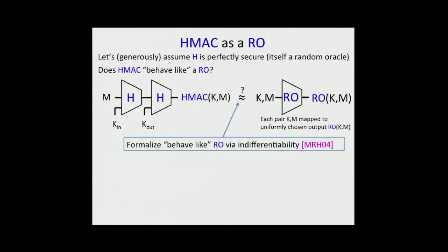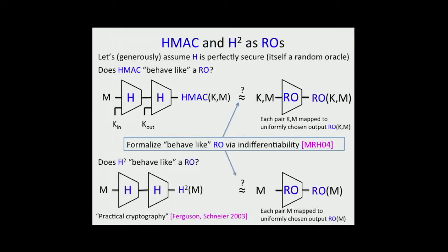We can formalize this question using the indifferentiability framework. This surfaces a simpler and very elegant question, which is the indifferentiability of a related construction, H squared, or the hash of hash construction. This was actually suggested in a textbook, Practical Cryptography, by Ferguson and Schneier in 2003. It's basically like HMAC without the keys. Just get rid of all the keys, and you have a hash function applied twice to a message. This was suggested particularly to avoid extension attacks that plague some prior hash function constructions.